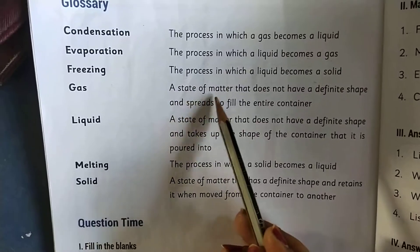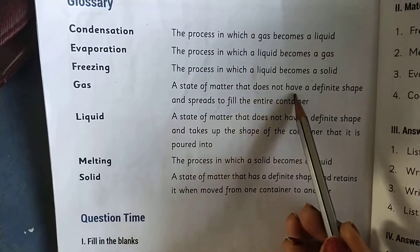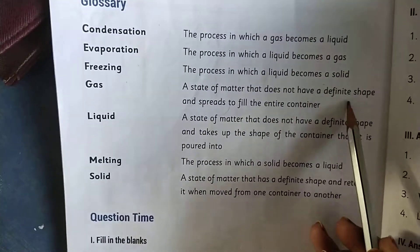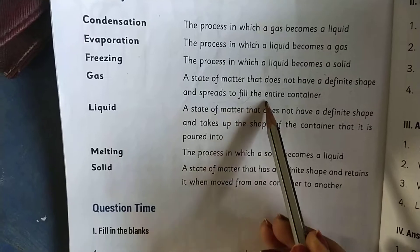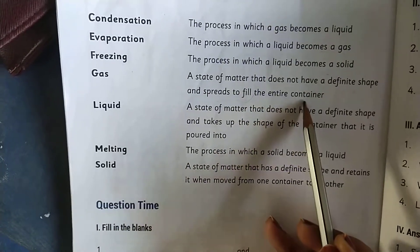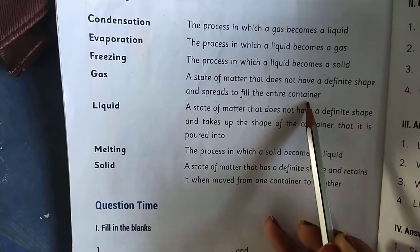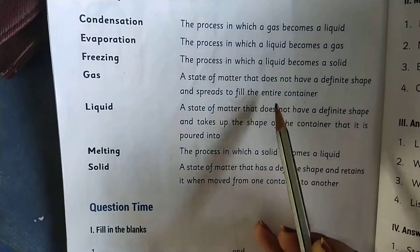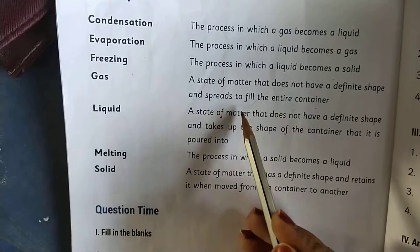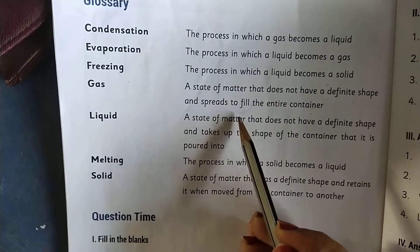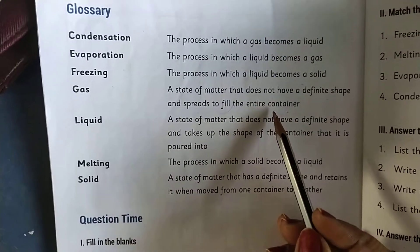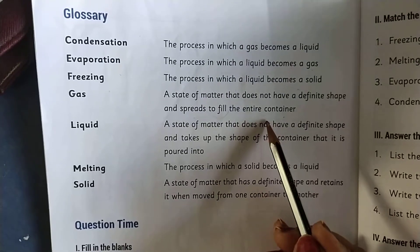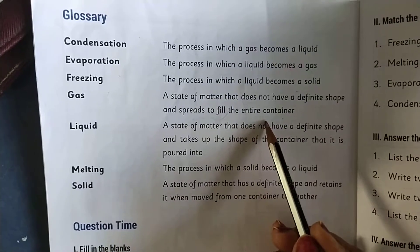Gas — a state of matter that does not have a definite shape and spreads to fill the entire container. Gas means it is a state of matter, so it doesn't have a shape, but it can spread to fill the entire container.